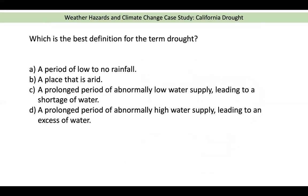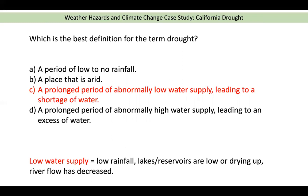A quick recap before we look at the impacts and responses during the California drought. Which is the best definition for the term drought? A: a period of low to no rainfall. B: a place that is arid. C: a prolonged period of abnormally low water supply leading to a shortage of water. D: a prolonged period of abnormally high water supply leading to an excess of water. The answer is C. Low water supply might be caused by low rainfall, lakes, reservoirs or rivers that are low and drying up, or where river flow has decreased. Prolonged means longer than normal, and abnormal means unusually, doesn't fit a pattern.